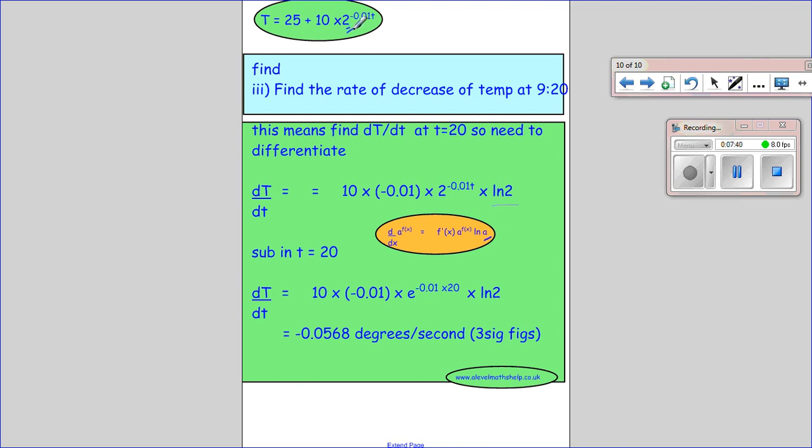I keep saying it. But people go wrong there. So it's ln of 2. And then once we've got all that, we can just put T equals 20 in here. And it all just slots into our calculator and gives us our answer.